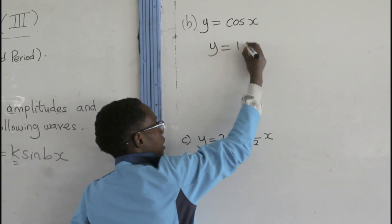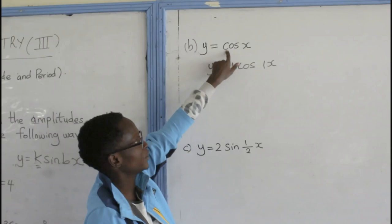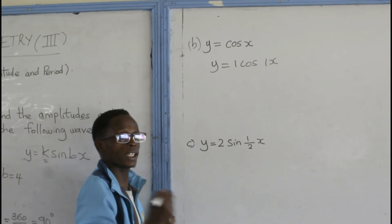As you can see, 1 times cos is the same as cos. 1 times x is the same as x. Applying the general formula Y equals to K sine B x.